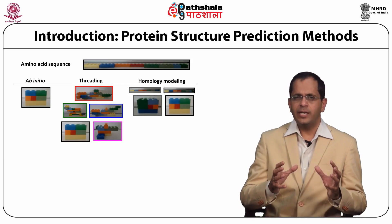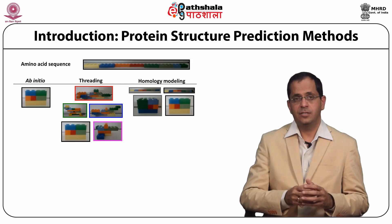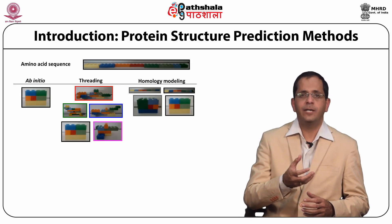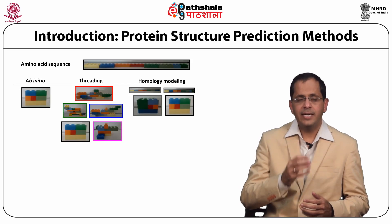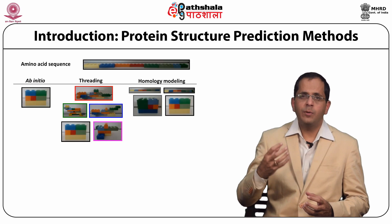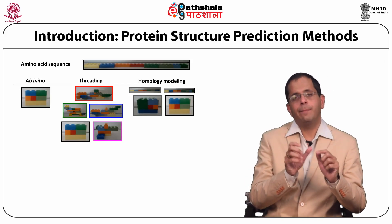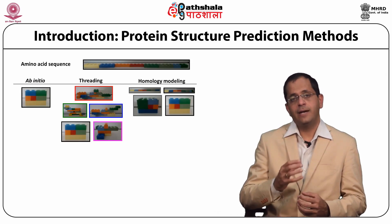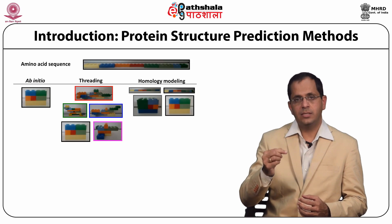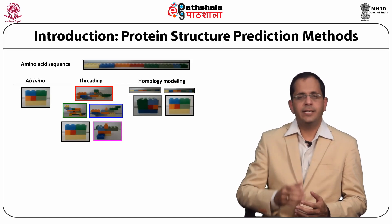Ab initio talks about developing a protein structure from scratch and is based on the biophysical principles that govern the folding of this particular sequence of amino acids. Threading tries to decipher the structure based on probable structural folds available in the data bank, involving a sequence-structure matching alignment. And finally, homology modeling is based on the fact that proteins with similar sequences will also have similar three-dimensional structures.